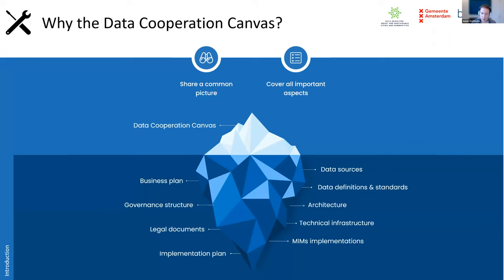Within all these documents, it might be difficult to grasp what the data cooperation is actually about. So it's very helpful to have an executive summary of the data cooperation, covering all the important aspects on a high level — it should fit on one page. For existing data cooperations, it's very helpful to have a high-level overview of what it's actually about. You've all read documents of 30, 40, or 70 pages and still wondered what it's exactly about. The data cooperation canvas is very helpful for seeing what it's about, and even if you have to compare multiple data cooperations, it's easy to see the different aspects.